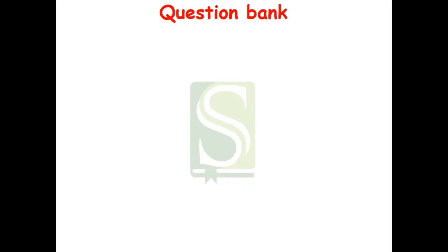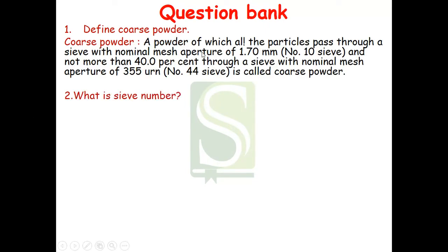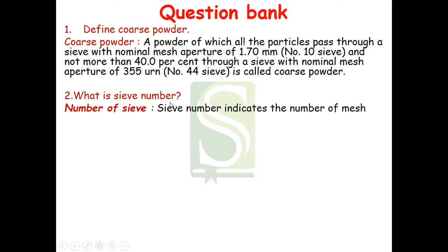Now let us see frequently asked questions on this topic. The first question: define coarse powder. Coarse powder is defined as the powder of which all the particles pass through a sieve with nominal mesh aperture of 1.70 mm — sieve number 10 — and not more than 40 percent pass through a sieve with nominal mesh aperture of 355 micrometers, sieve number 44. The second question: what is a sieve number? This is a common MCQ question.